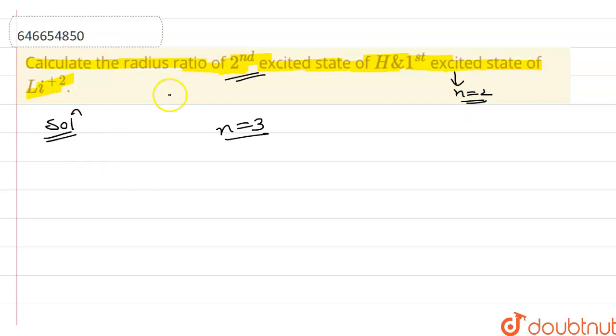So we have to take the ratio of the radius. I am writing the formula of radius that is 0.52 into n square upon z for any nth orbit of any kind of species.